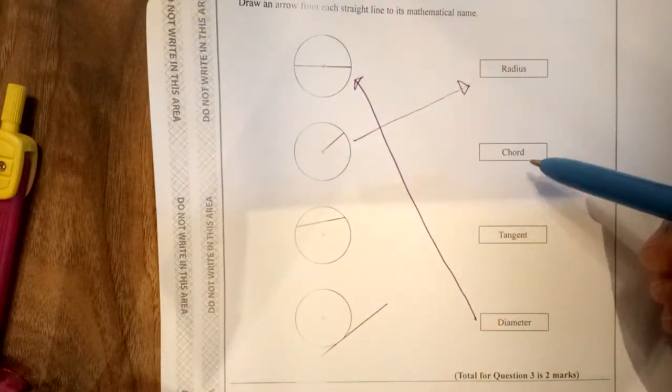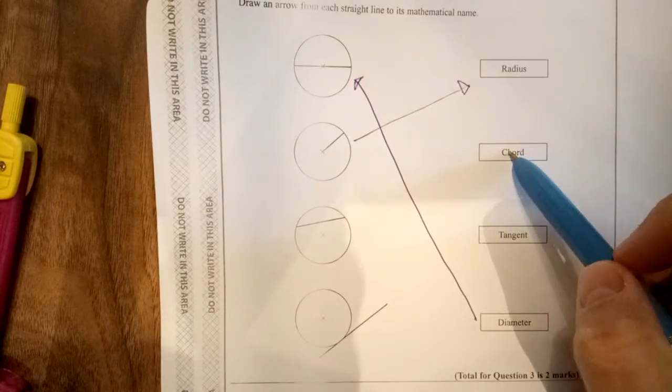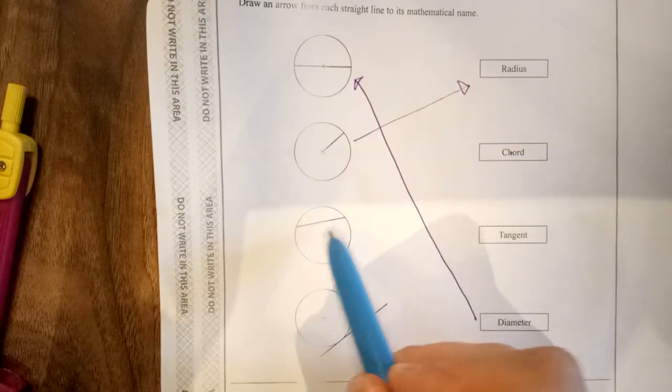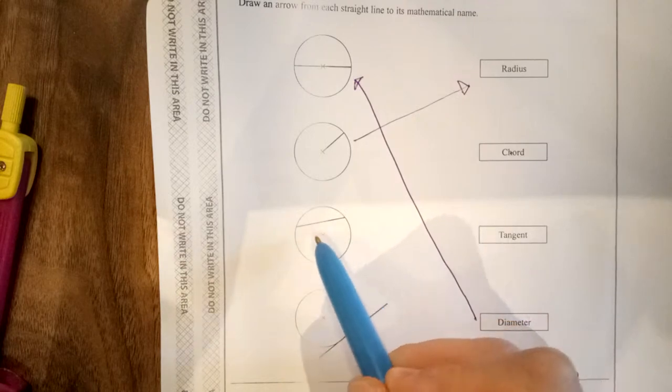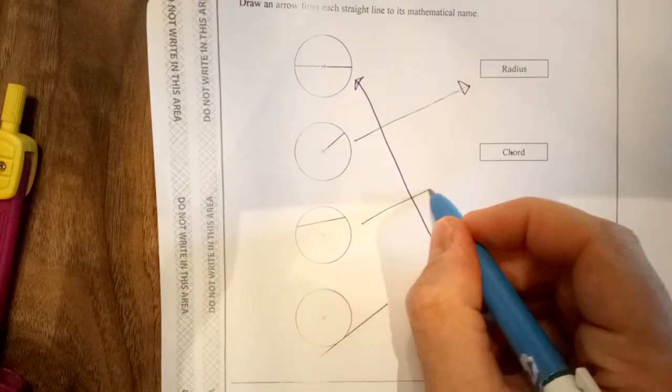And it's really these two that get confusing. Now your chord is this bit here. Imagine you had a piece of string, which we call a chord, like a chord of string and you're holding it at two points of a circle. It'll go there.